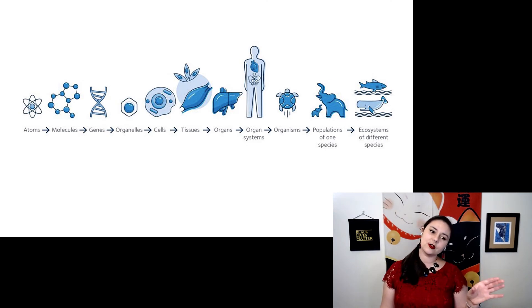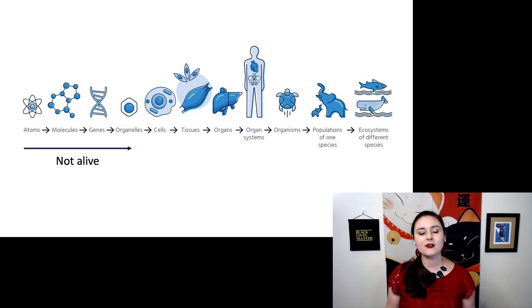So in these first few levels of organization, none of it is alive. But all of a sudden, we get to cells and we have life. They're alive. It's really magical. Because there's no single component of a cell that gives it this life. It's all of this together. Life is the emergent property at the cellular level.